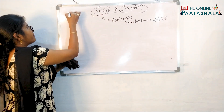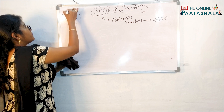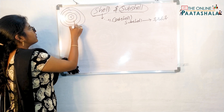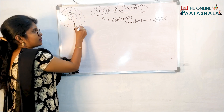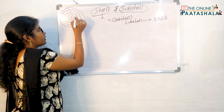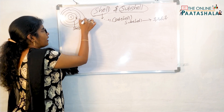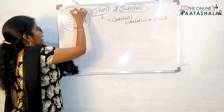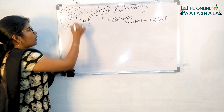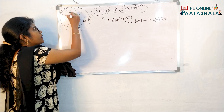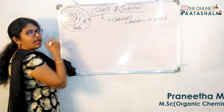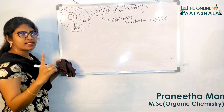I will just draw the diagram in a rough way. These are shells, and these shells have been given the names K, L, M, and N. Nearest to the nucleus you will be numbering it as the first shell.